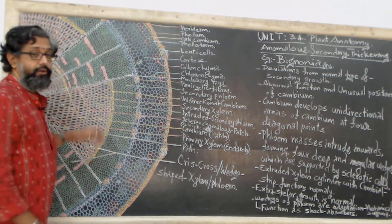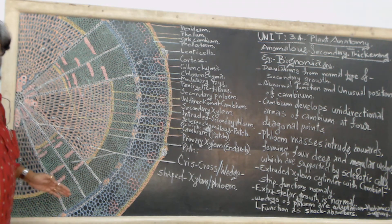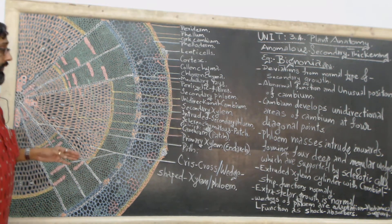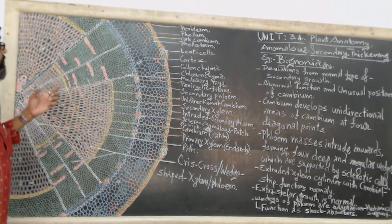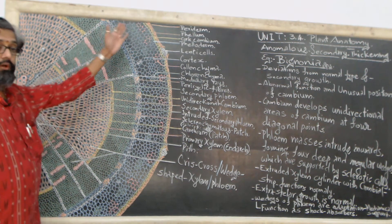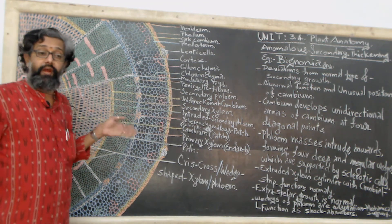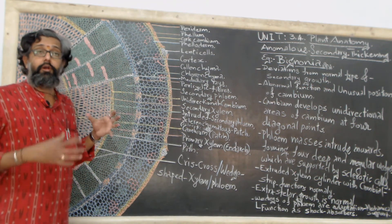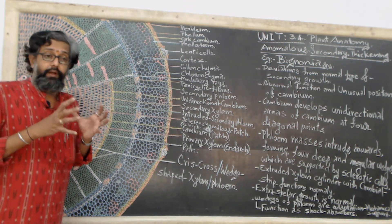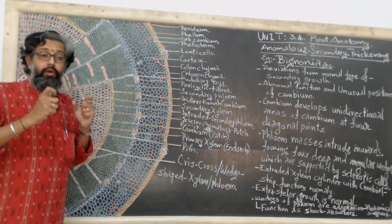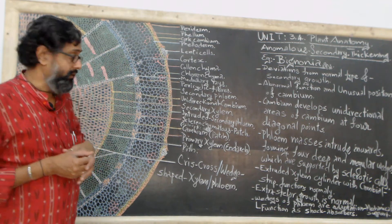Here we can see the overall appearance of the dicot stem through a diagrammatic or anatomical viewpoint. We can see that the outer layer of the stem is somewhat wavy in nature and the outer area of the stem appears irregular. It is somewhat rigid and folded in appearance.